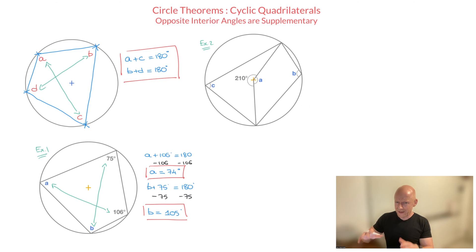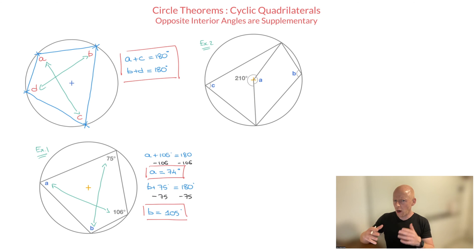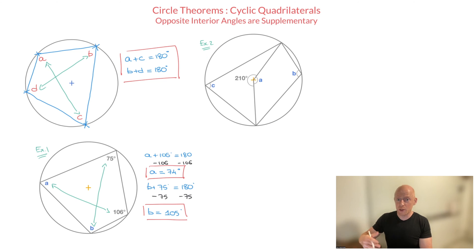Let's look at the second example. This one's a little bit more complicated — in fact it involves more than just one circle theorem. We need to find the unknown angles A, B, and C. Looking at this, we can see that we do have a cyclic quadrilateral, but we also have an angle at the center of the circle. Now if you're unfamiliar with the theorem on the angle at the center and the angle at the circumference, you may want to check that out — you'll find a link to my video on that theorem in this video's description. But I'm going to carry on solving this example, assuming you're aware of that theorem.